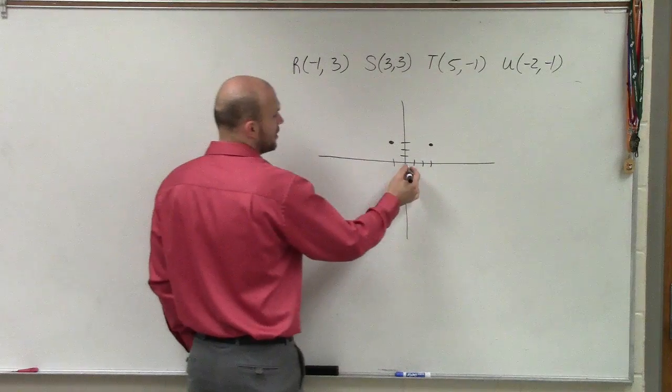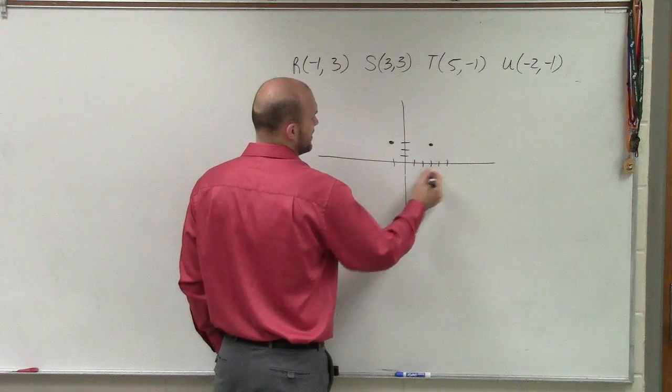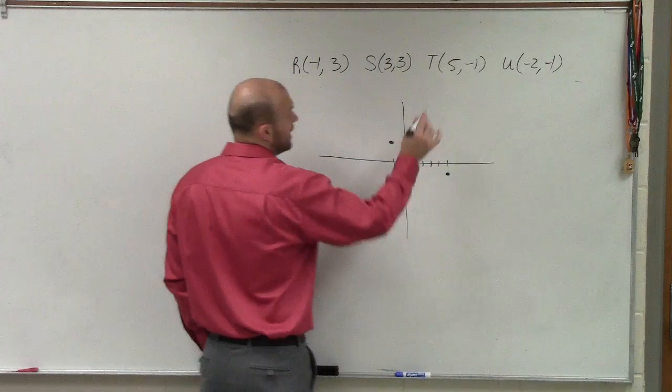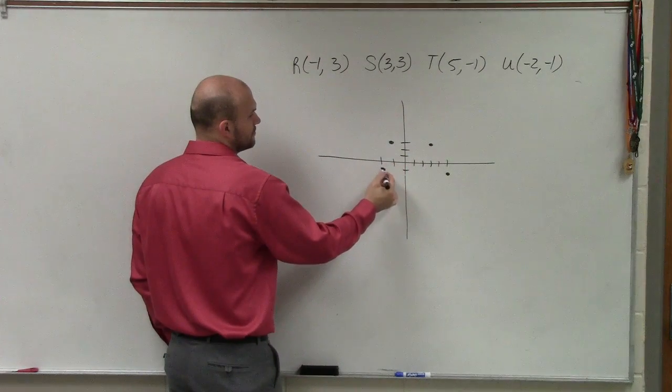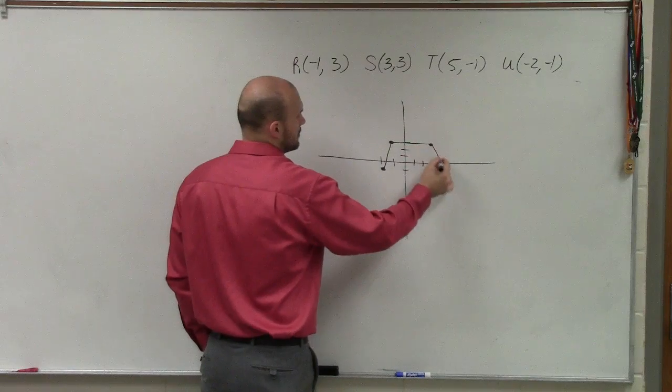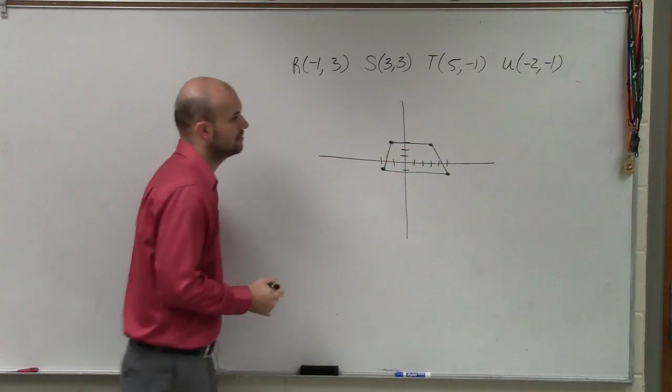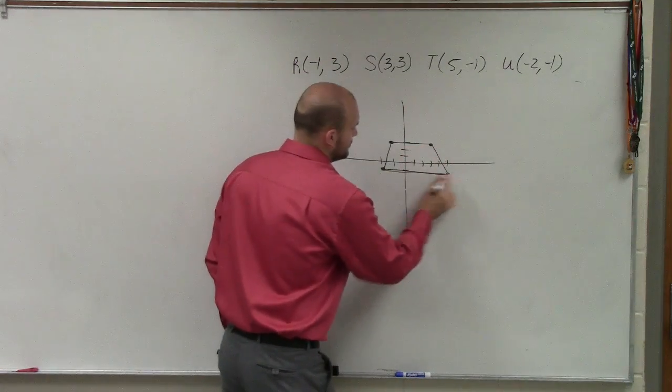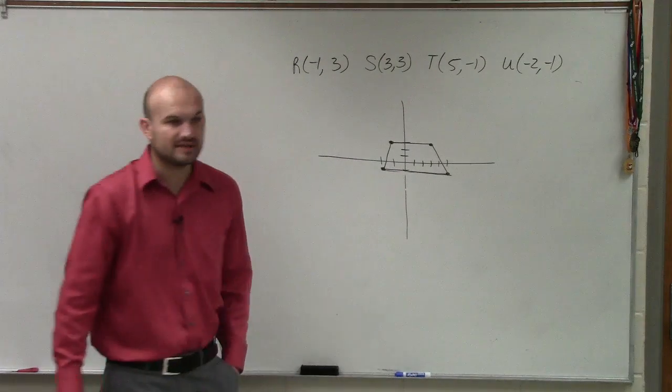T is 5, negative 1. And U is negative 2, negative 1. That's the shape of it. That's the figure, right?